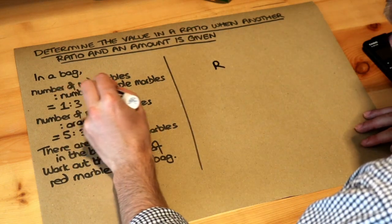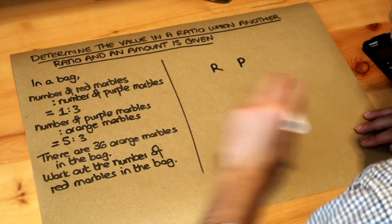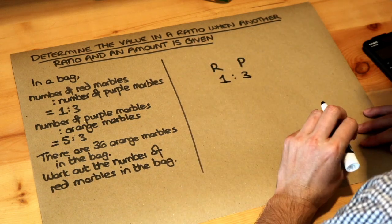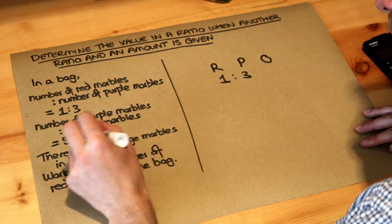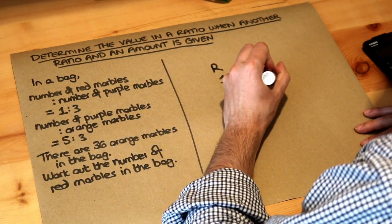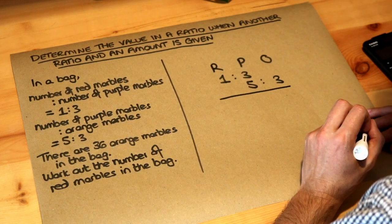The ratio of red to purple is one to three and the ratio of purple to orange is five to three and we want to combine those into a single ratio.